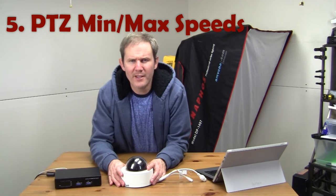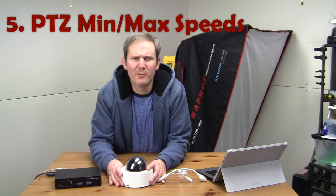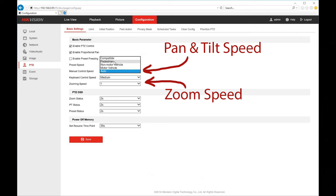And lastly, let's look at the pan, tilt, and zoom minimum and maximum speeds. This is the speed at which the camera pans, tilts, and zooms, and it's configurable. So let's look at how to do it and then test it out. So here's where the value is set. It's on Configuration PTZ, Basic Setting, Basic Parameter, and Manual Control Speed. The zoom speed is set just below this.